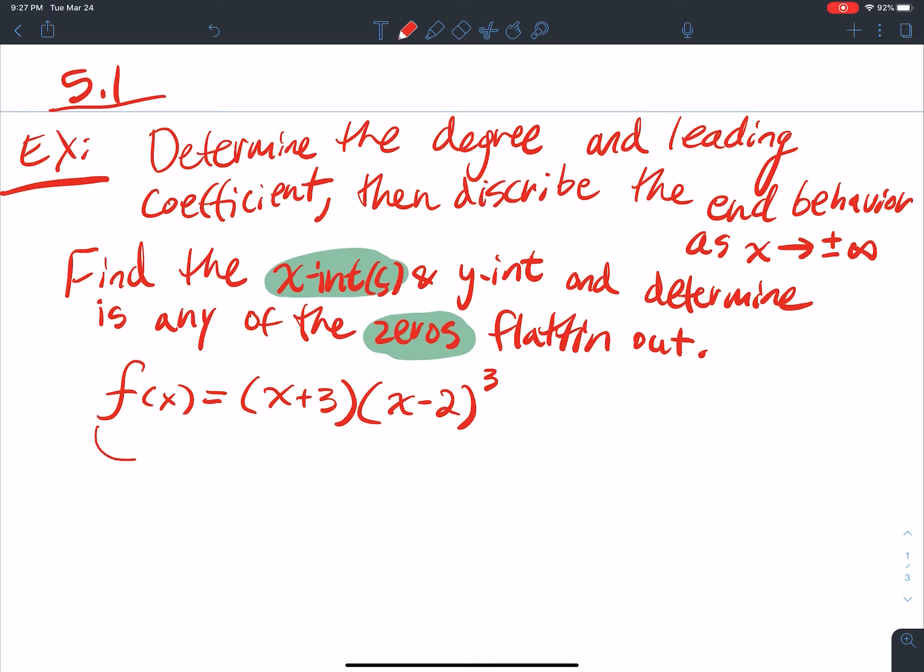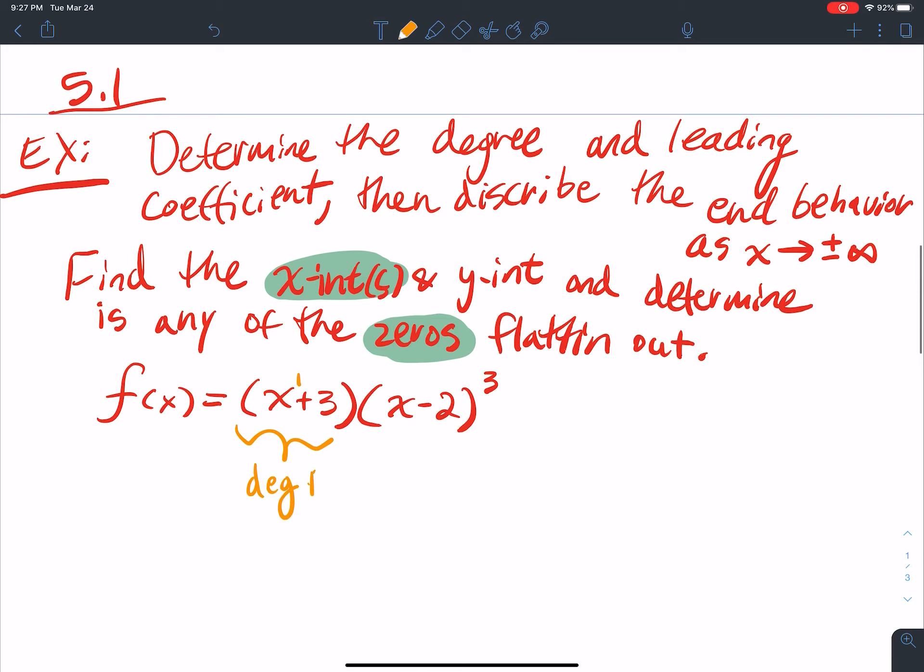All right, so here's my function: f(x) equals quantity x plus 3 times quantity x minus 2 cubed. When I look at this, the first one, the degree of that first term is a degree 3... I'm sorry, degree 1. And the degree of the second one, well, this is an x to the 1 inside, but how many times do I have it? I have it three times. So if I multiplied that out, first off, that would be a lot of work, right?